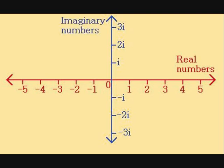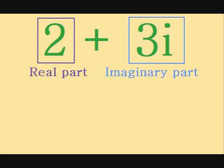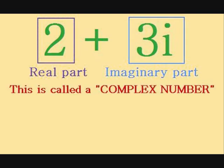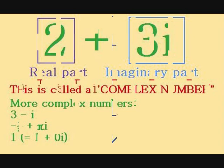We can now extend this system even further. We can add a real number, say 2, to an imaginary number, say 3i. What we have now is a number that has a real part and an imaginary part. Such a number is known as a complex number. Other examples would be 3 minus i, minus 1 half plus pi i, and 1. Yes, 1 is a complex number as well. It's equal to 1 plus 0i, so it does have a real part and an imaginary part, but it just so happens that its imaginary part is equal to 0.